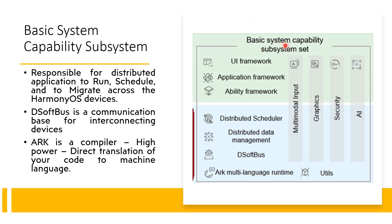The basic system capability subsystem set is responsible for distributed applications — to run, schedule, and migrate across devices. It includes D-software, which is the communication base for interconnecting devices. There is also support for ARC, a high-performance compiler for direct code-to-machine-language translation, a distributed scheduler, distributed data management, and utilities. All these make this subsystem very powerful.